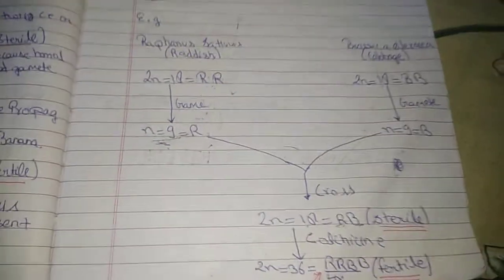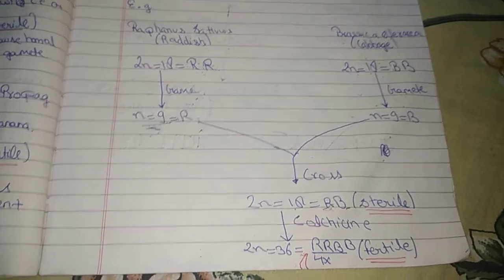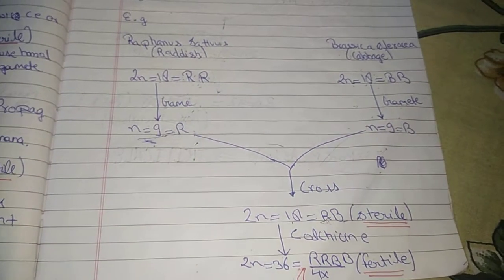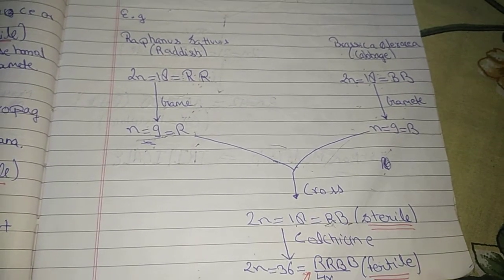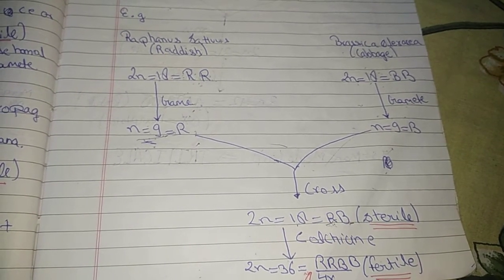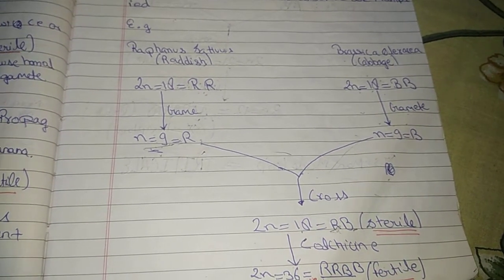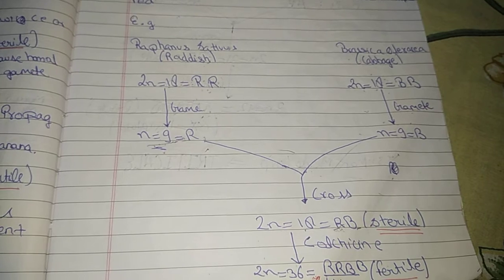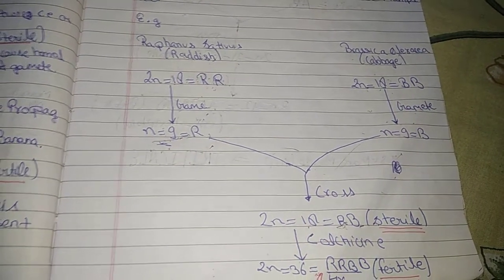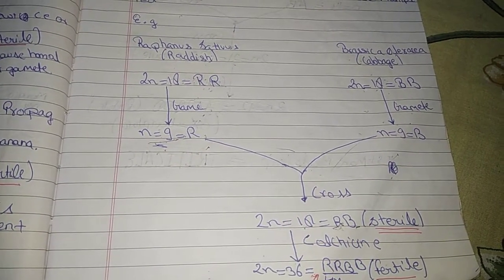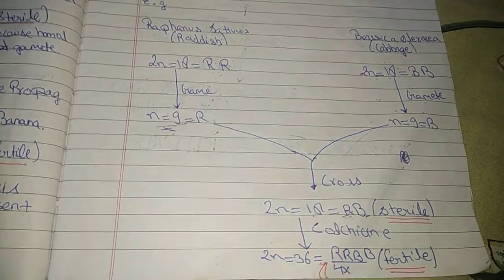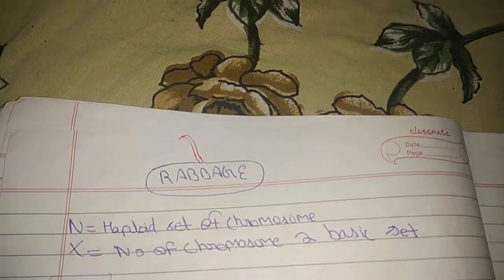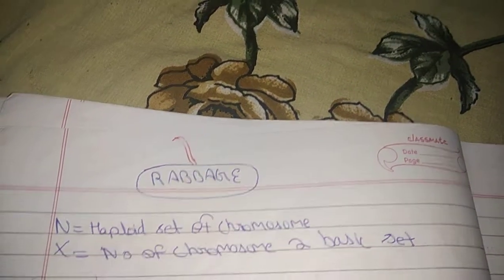The product obtained from crossing Raphanus sativus and Brassica oleracea is named Raphanobrassica. That's all about polyploidy. Thank you, have a nice day.